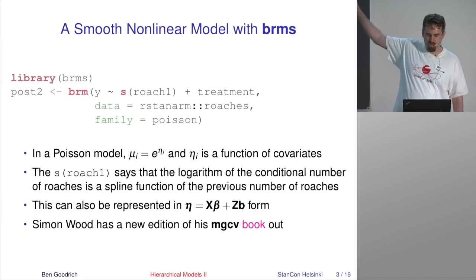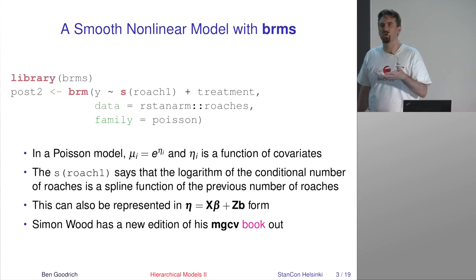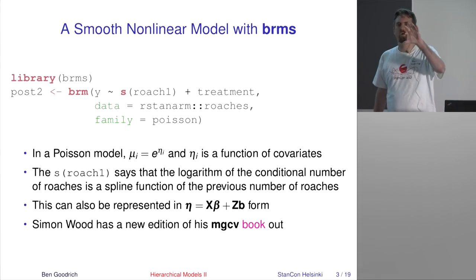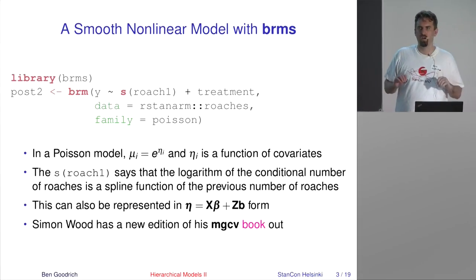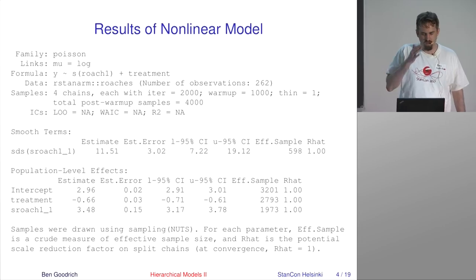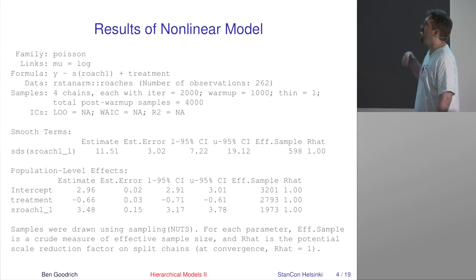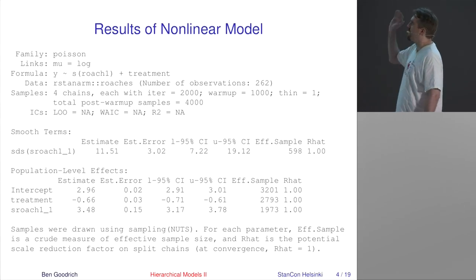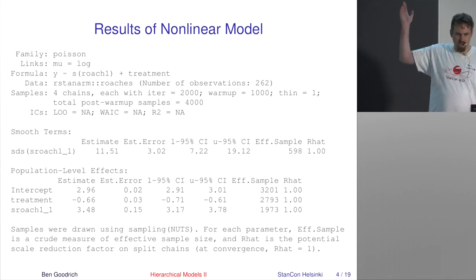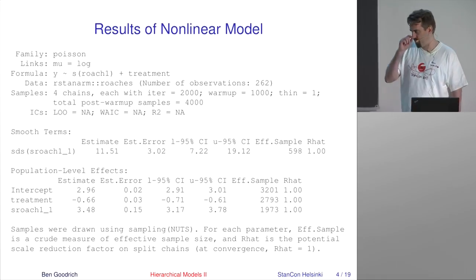We specify that syntax and pass it to BRM. This requires a C++ compiler because it's going to build the Stan program and compile it locally, unlike rstanarm which comes with compiled models from CRAN. It'll take about 30 seconds to compile and then like two seconds to obtain the output, which can be summarized if you do print or summary on something produced by BRM.